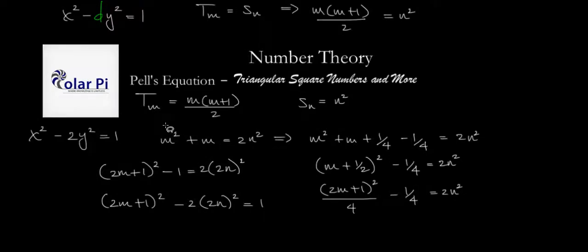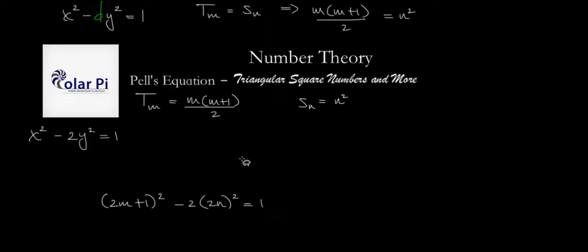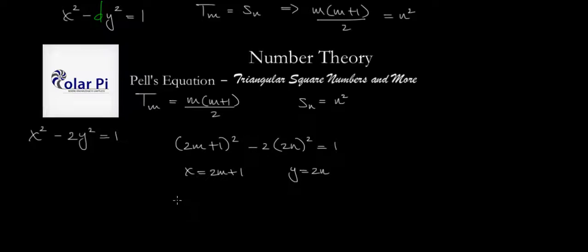I'm going to write 8n squared as 2 times 4n squared, which I can in turn write as 2 times 2n squared. Now rearranging this equation, we can get 2m plus 1 squared minus 2 times 2n squared equals 1. Then, if we let x equal 2m plus 1, and let y equal 2n, then we have exactly x squared minus 2y squared equals 1. So that's why finding triangular square numbers has everything to do with solving this particular Pell's equation when d equals 2.